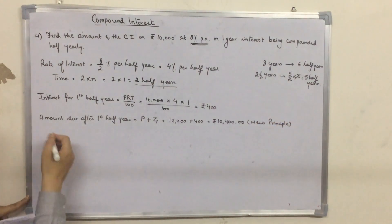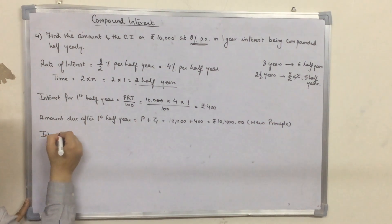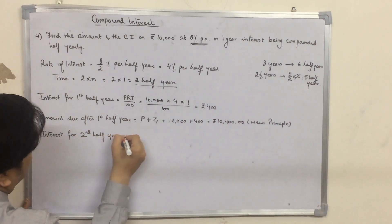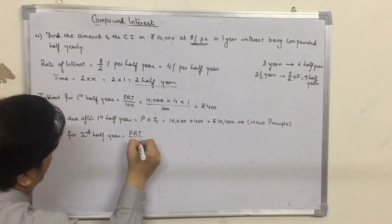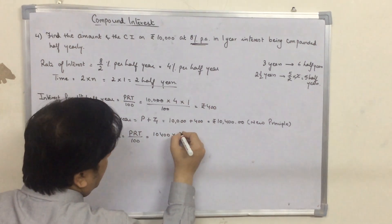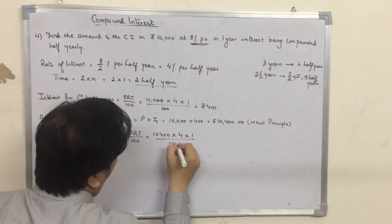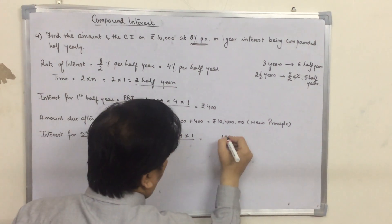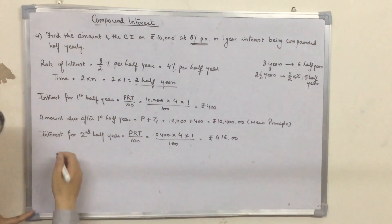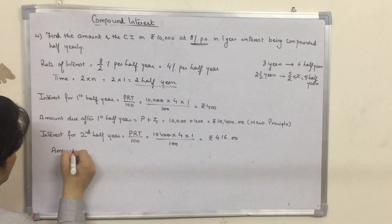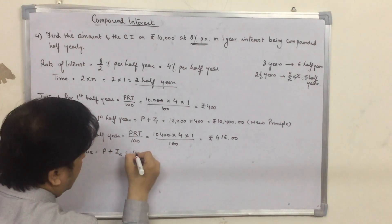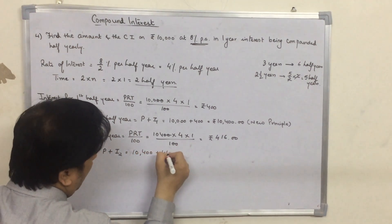Now we find the interest for the second half year. This is again PRT upon 100. The principal is now 10,400 rupees, the rate of interest is 4%, and the time is 1 upon 100. The interest for the second half year is 416 rupees. We then find the amount due, which is P plus I2: 10,400 plus 416.